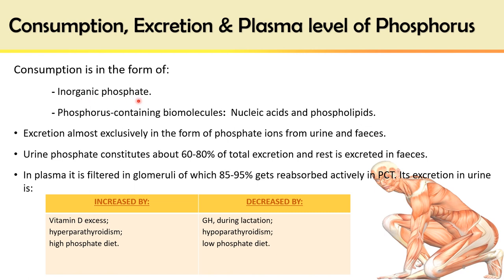Inorganic phosphates include hydroxyl apatite crystals of bone, inorganic phosphates of plasma or serum, and intracellular anions of phosphates. Organic phosphates are phosphorus-containing biomolecules such as nucleic acids, phospholipids, high-energy phosphate molecules, and phosphate esters of monosaccharides.